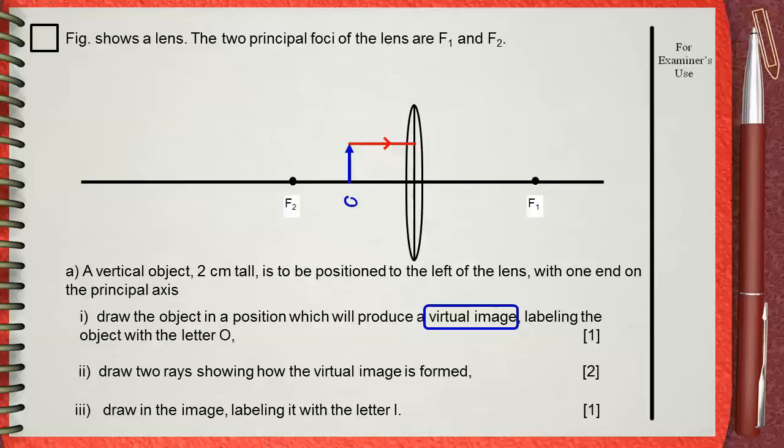Now this ray will be refracted, so it passes through the opposite focus F1. The second ray from the tip of the arrow is that one that will pass through the optical center of the lens, and this ray will pass undeviated with no refraction.